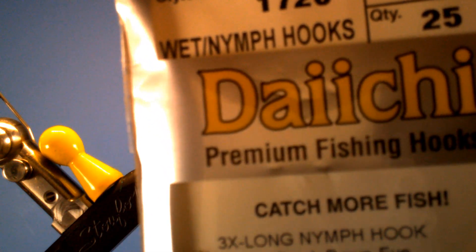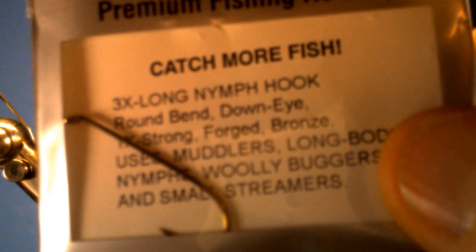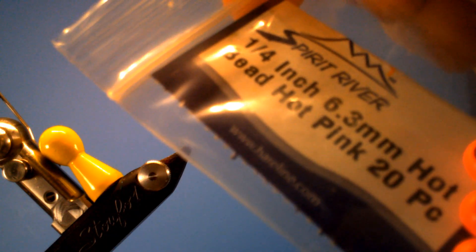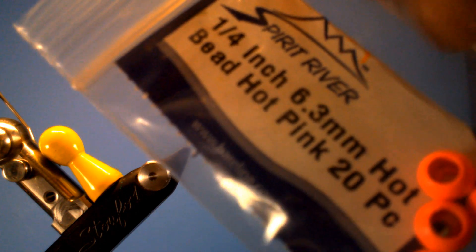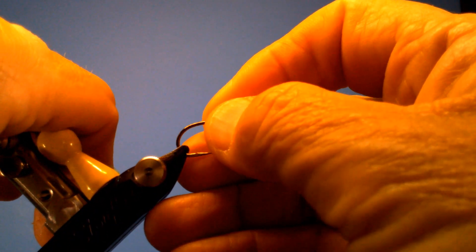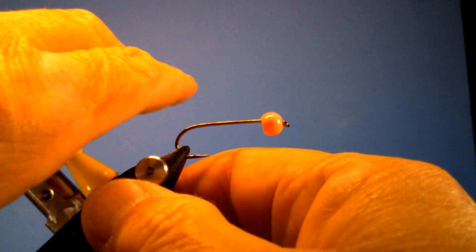The hook I'm going to use is a Daiichi 1720 in a size 4, a 3x long nymph hook. The beads I'm going to use are hot pink hot bead by Spirit River, quarter inch or 6.3 millimeters. It's a big bead for the hook that we're using, but I want it to get down in the water column. I normally fish with a sink tip, about a 9 foot sink tip along with the leader.